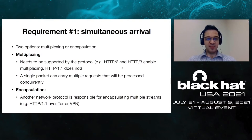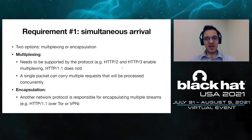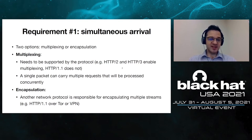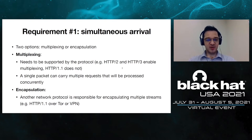The first requirement — that two requests arrive simultaneously — can be fulfilled using two options: multiplexing or encapsulation. HTTP/2 supports concurrent requests and allows two requests to be sent in a single TCP packet, processed concurrently. Alternatively, we can rely on encapsulation, for example exploiting HTTP/1 when run over Tor or a VPN connection.